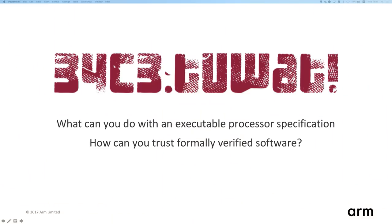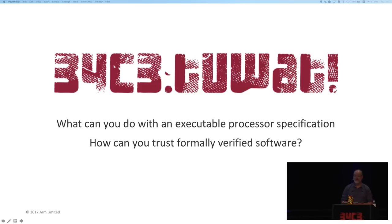I'm going to be talking about some work I started about six years ago, creating a very precise specification of what an ARM processor does. Back in April, ARM released their specification in machine-readable form, and I'm working with Cambridge University to turn that into something you can use. This talk will mostly focus on this executable processor specification, and at the end, that sets me up to talk about formally verified software.